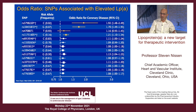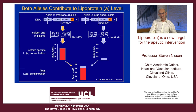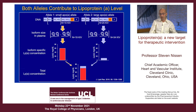Both alleles contribute to the lipoprotein A level. An allele coding for apolipoprotein A with many Kringle 4 repeats — in this case 34 — contributes just a little bit to the lipoprotein A level, shown in blue. An allele with fewer Kringle 4 repeats contributes a great deal, shown in orange. If you combine the effects of both alleles, that determines the level — in this case, up around 70 milligrams per deciliter, where you start to see a lot of harm.